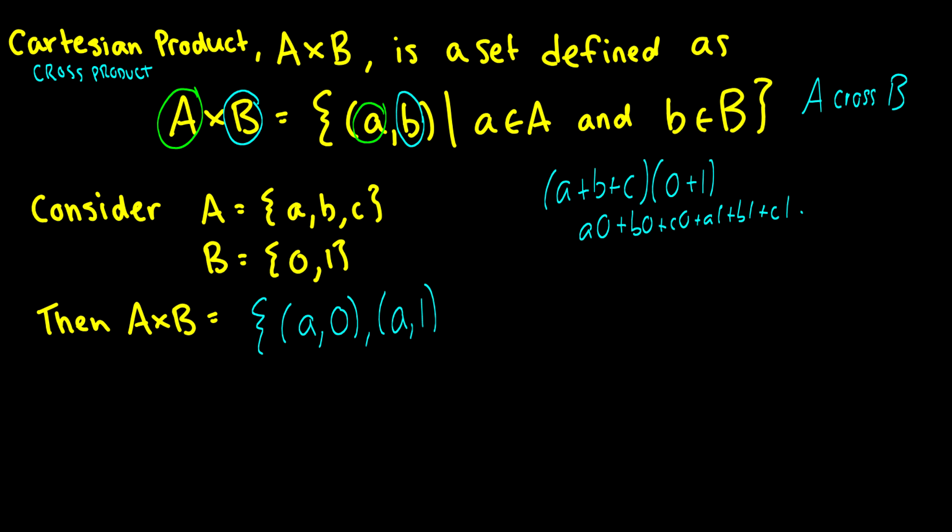So we have a goes with 0, a goes with 1, b goes with 0, and then b goes with 1. And then we have c going with 0 and c going with 1. So this is the cross product of A cross B. It's a little bit more straightforward when you see an example, but basically every element in A is paired with every element of B, one at a time.